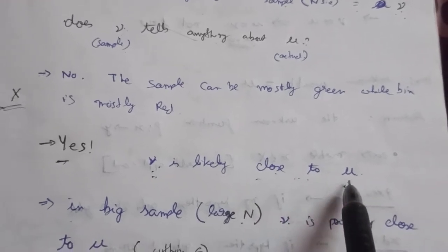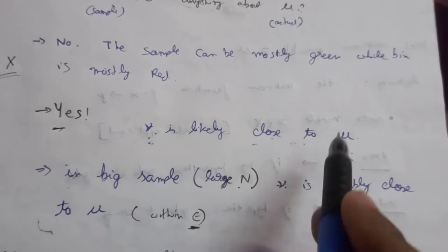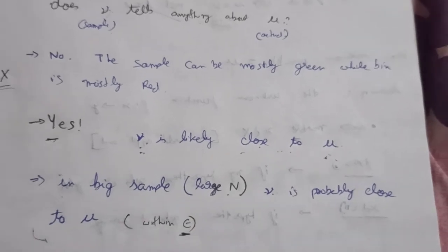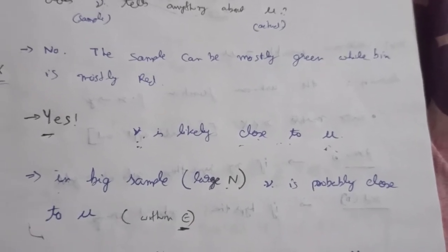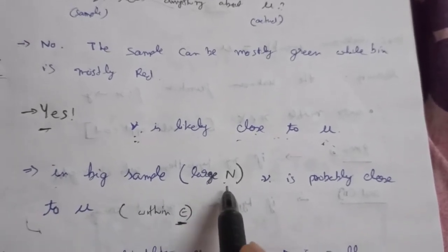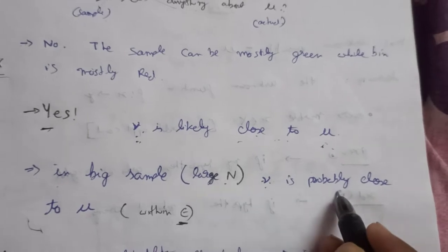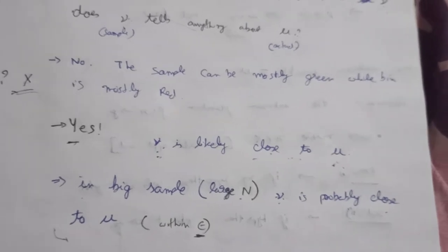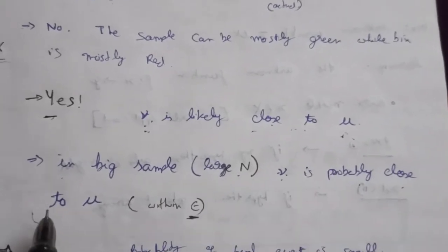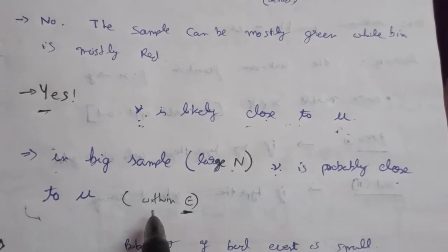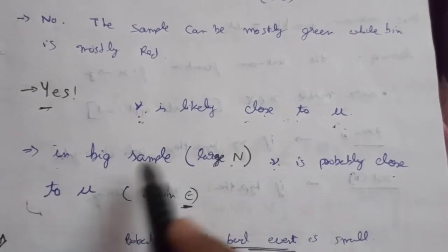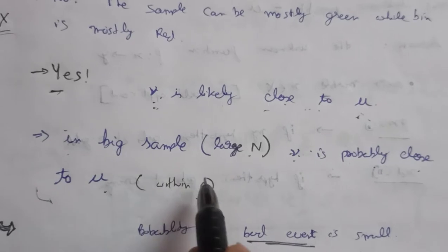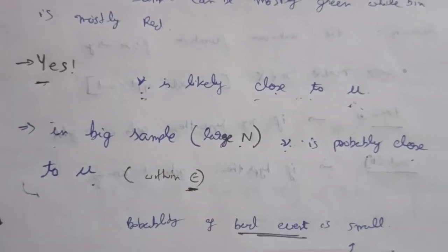In a big sample, that is for a large capital N, nu is probably close to mu. It is not saying that nu is going to be exactly equal to mu, but the value of nu is going to be close to mu. Close means within epsilon — the difference between nu and mu will be less than or equal to epsilon. This epsilon is the tolerance of our system — how much error we can tolerate.